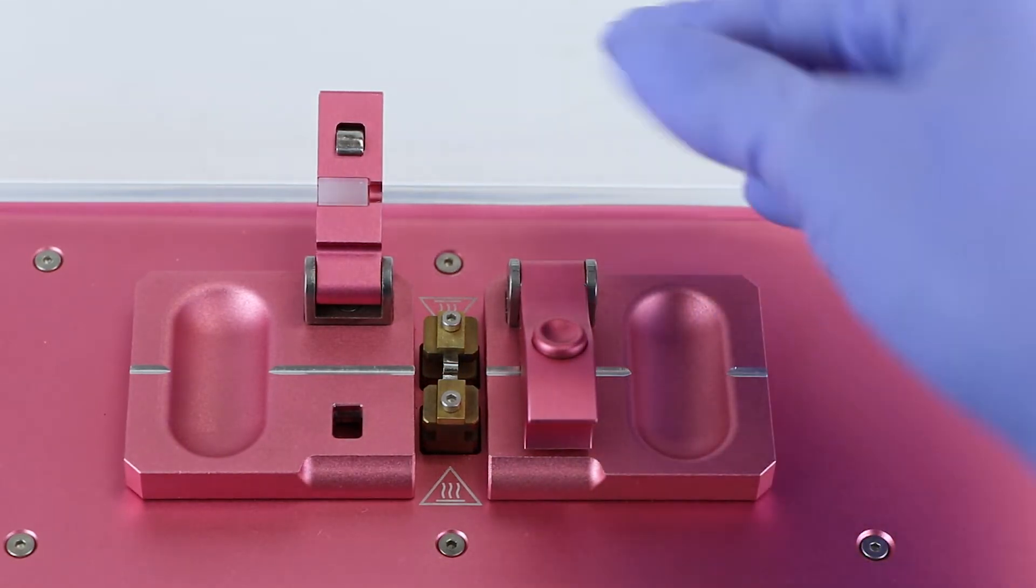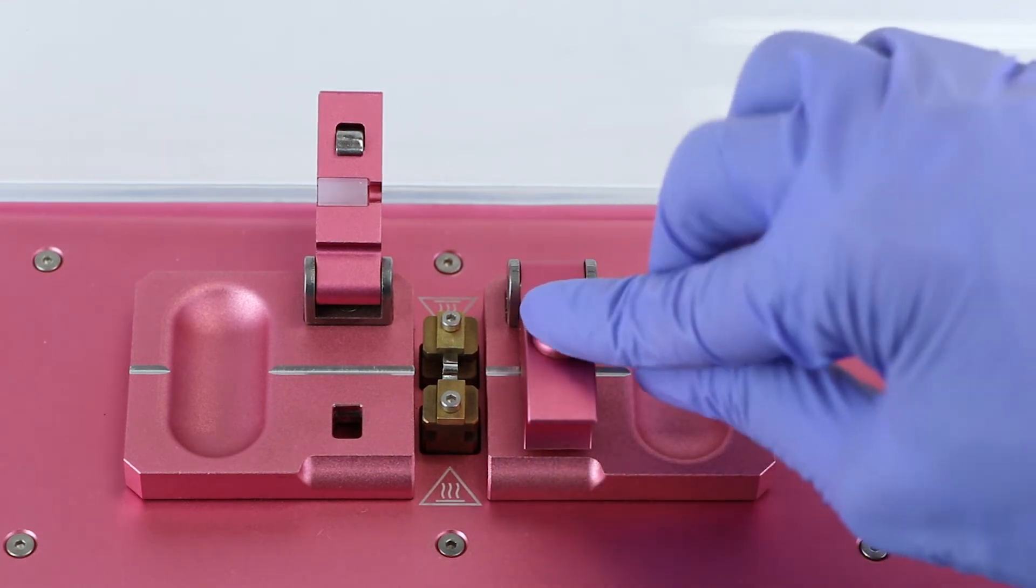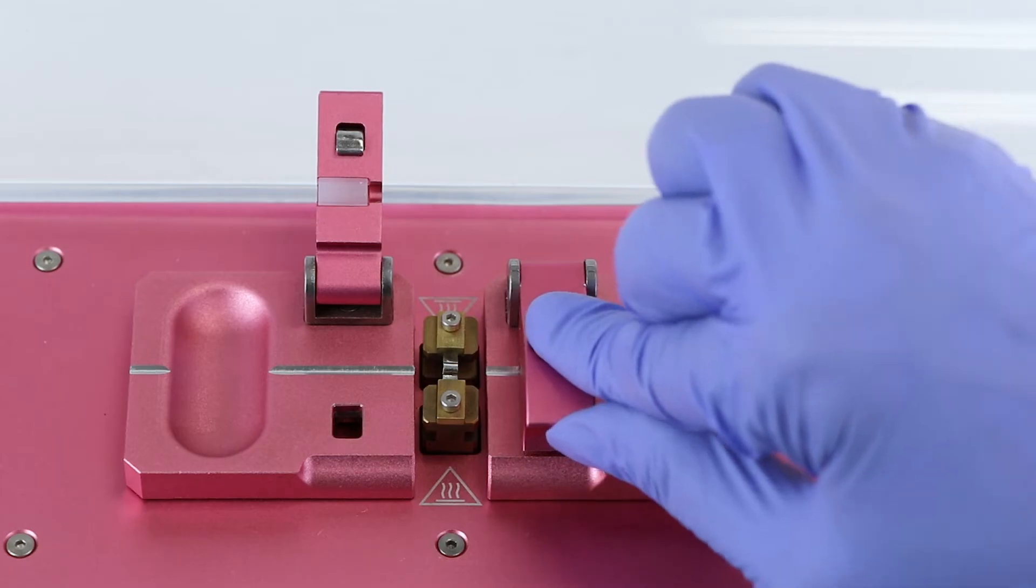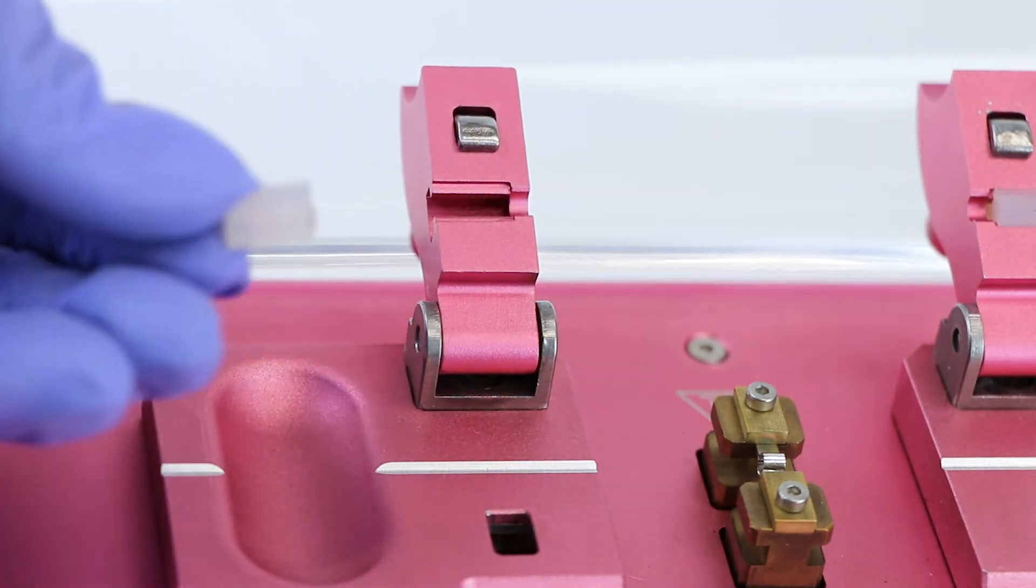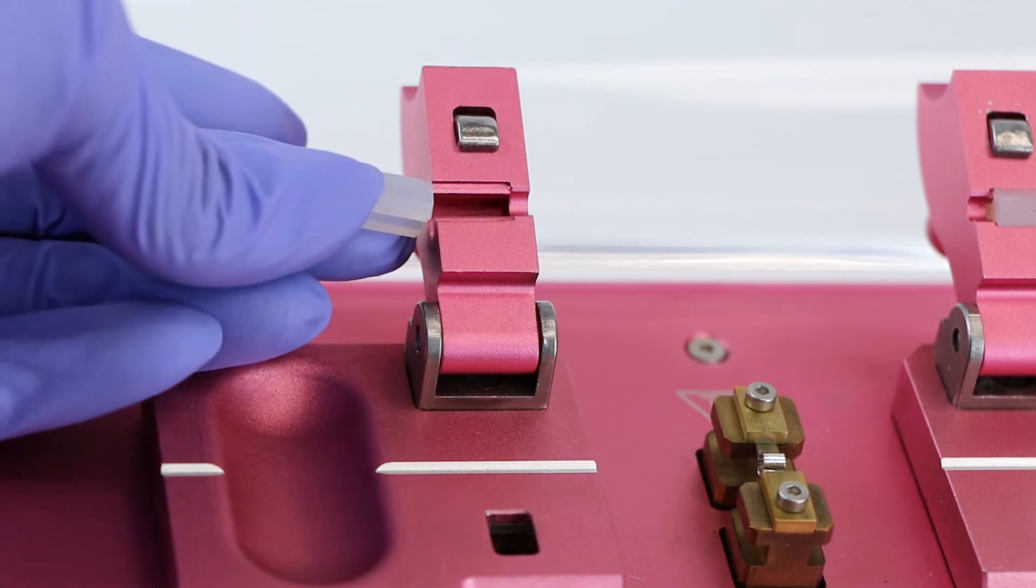Place your thumb under the clamp and depress the release button with your index finger to unlock the glass capillary clamp. Slide the glass capillary clamp pad matching the outer diameter of your glass capillary into place.